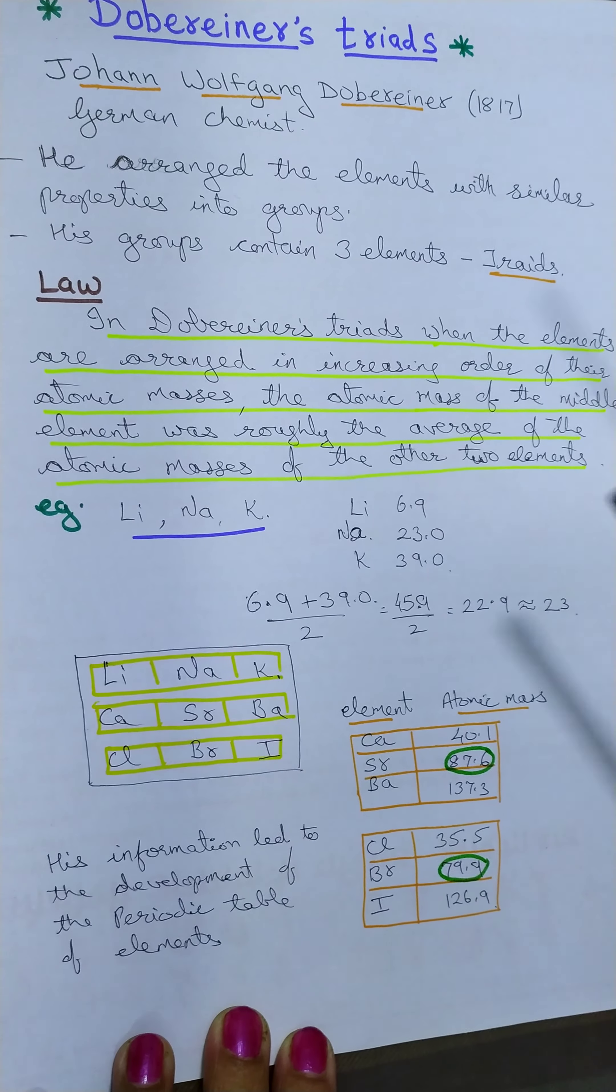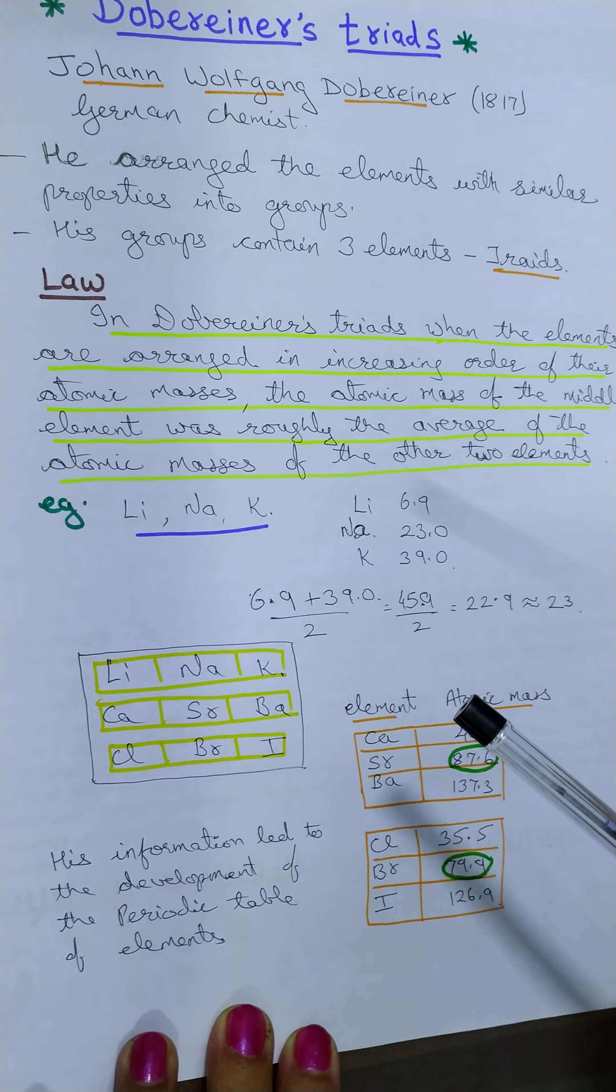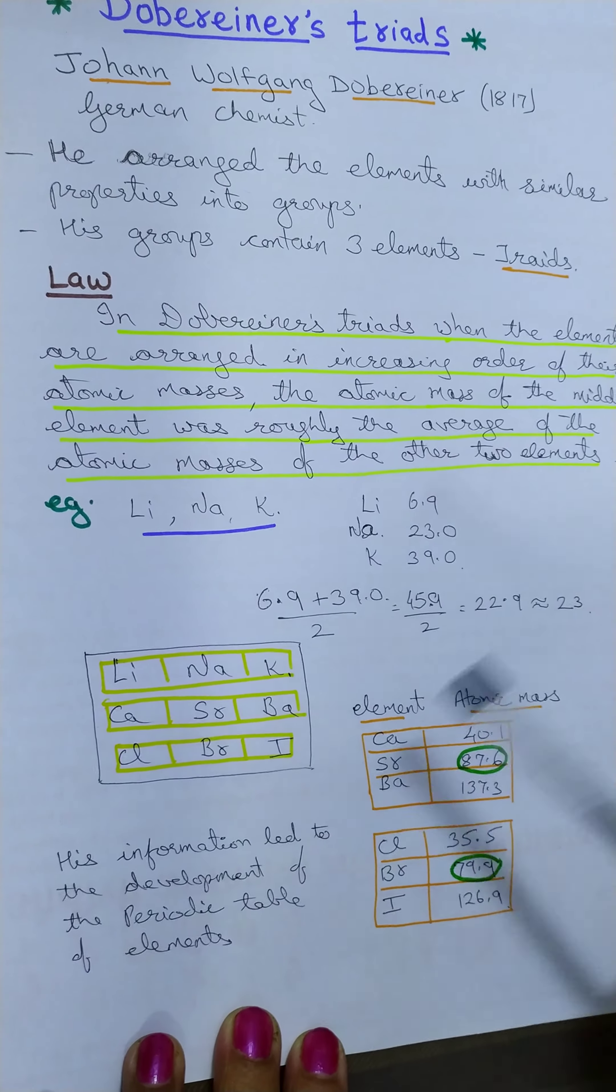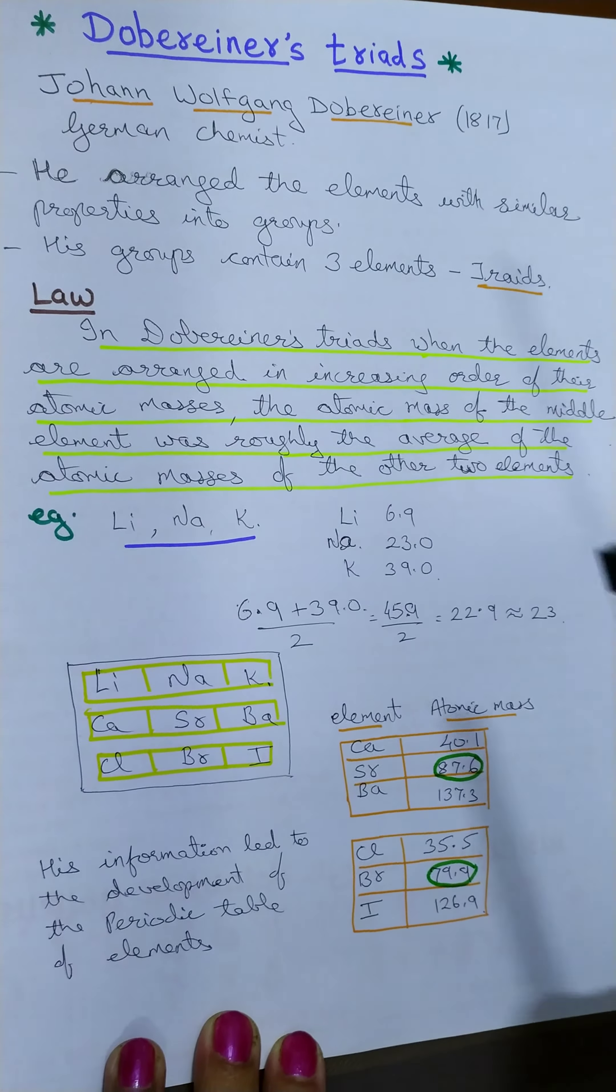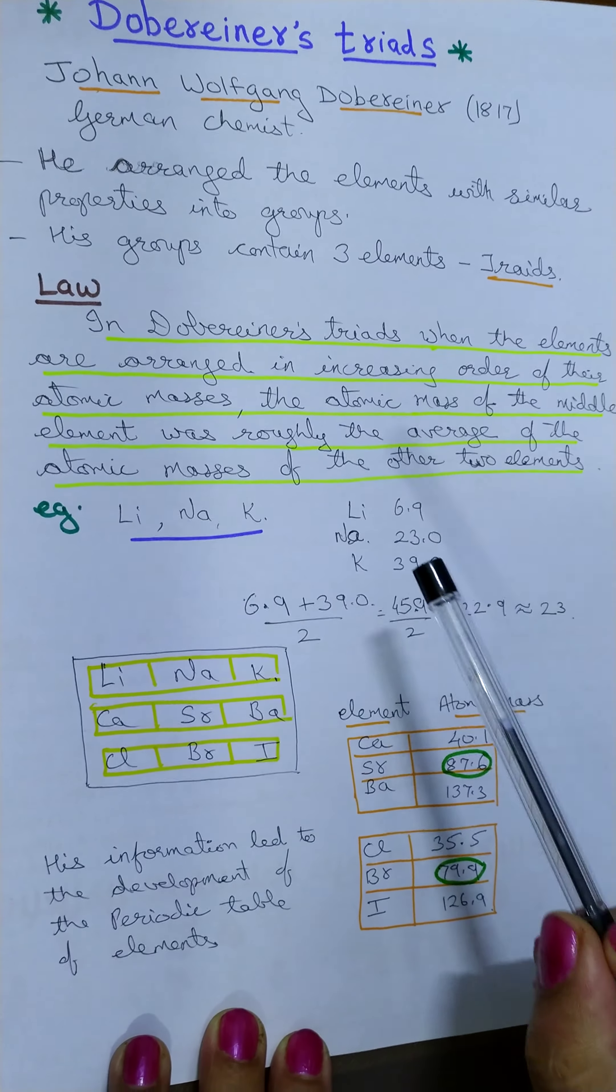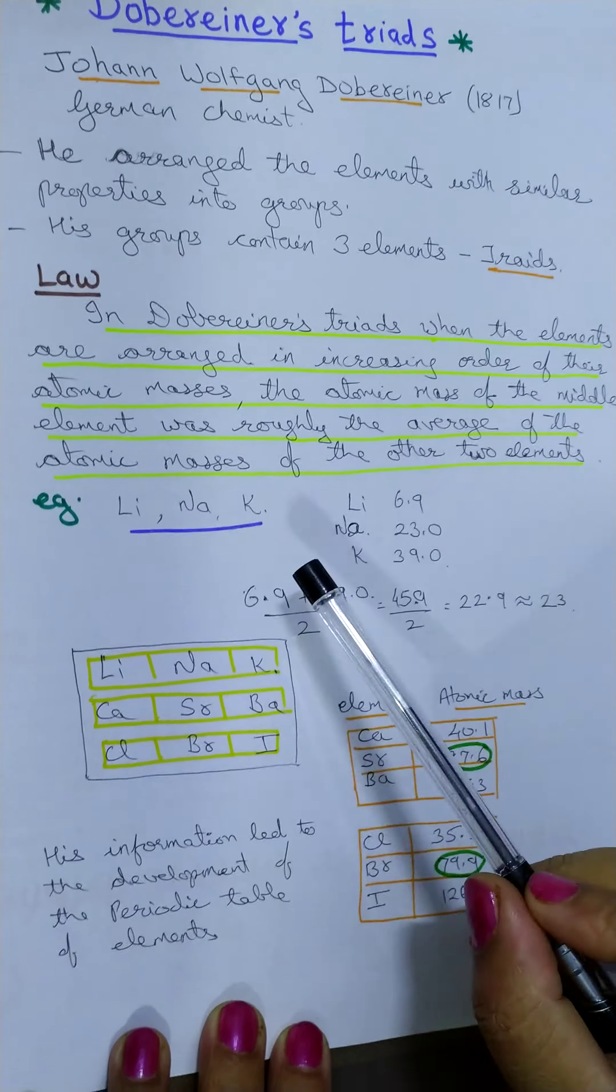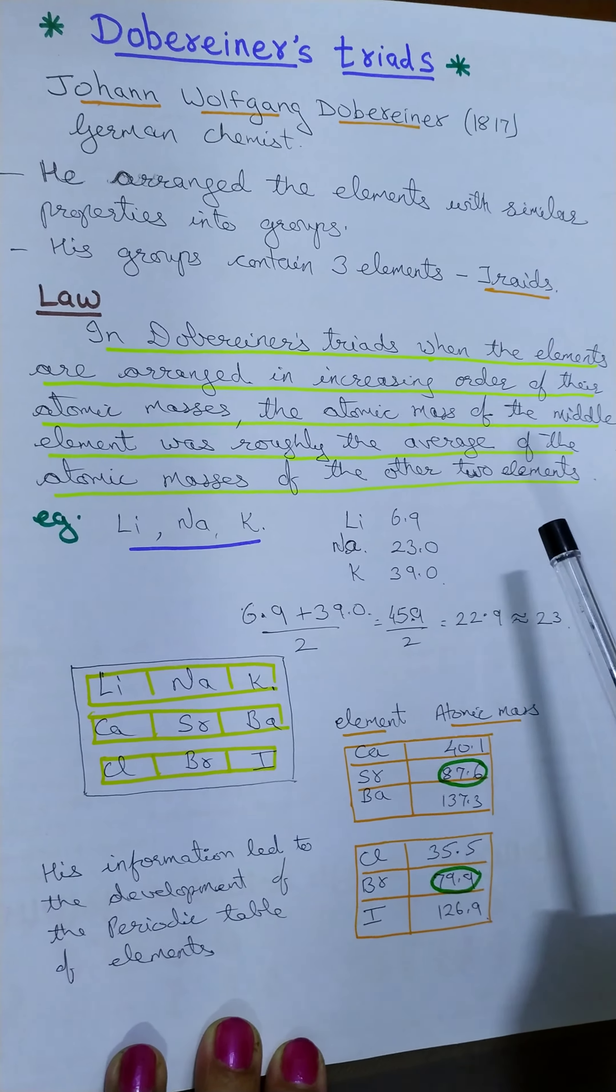During Dobereiner's time, only few elements were known. He studied all those elements and made the triads. Triads contain three elements each. His law was that the atomic mass of the middle element was the arithmetic or approximate mean of the atomic masses of the other two elements.